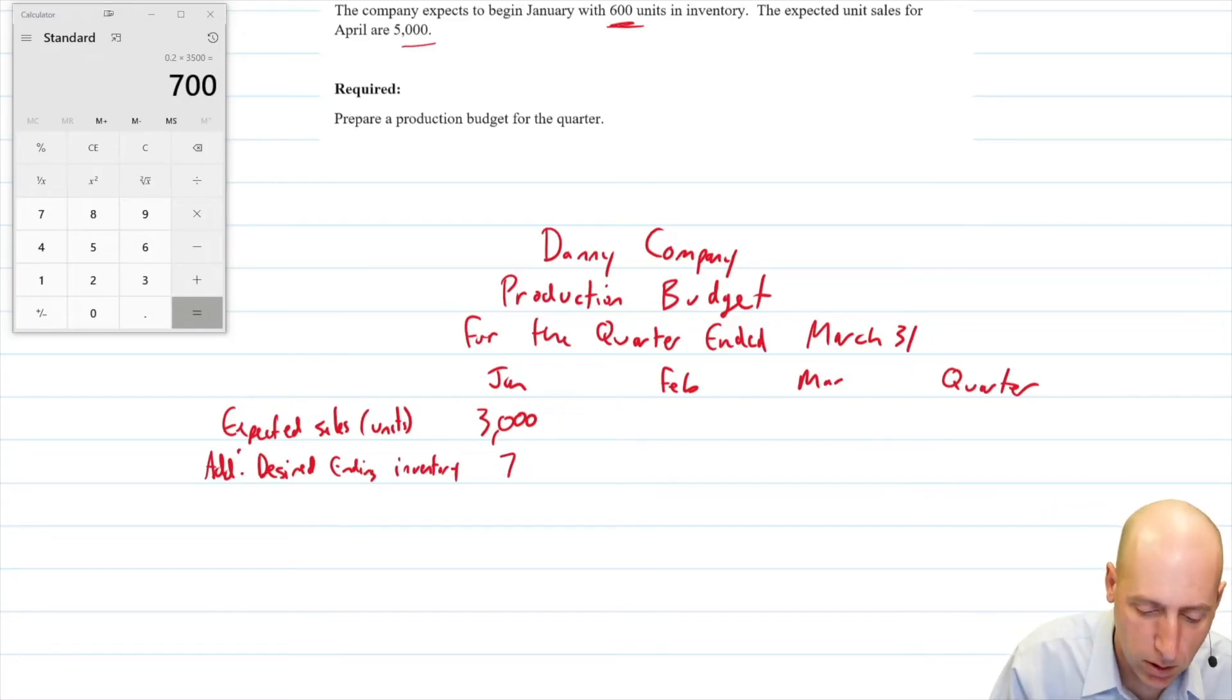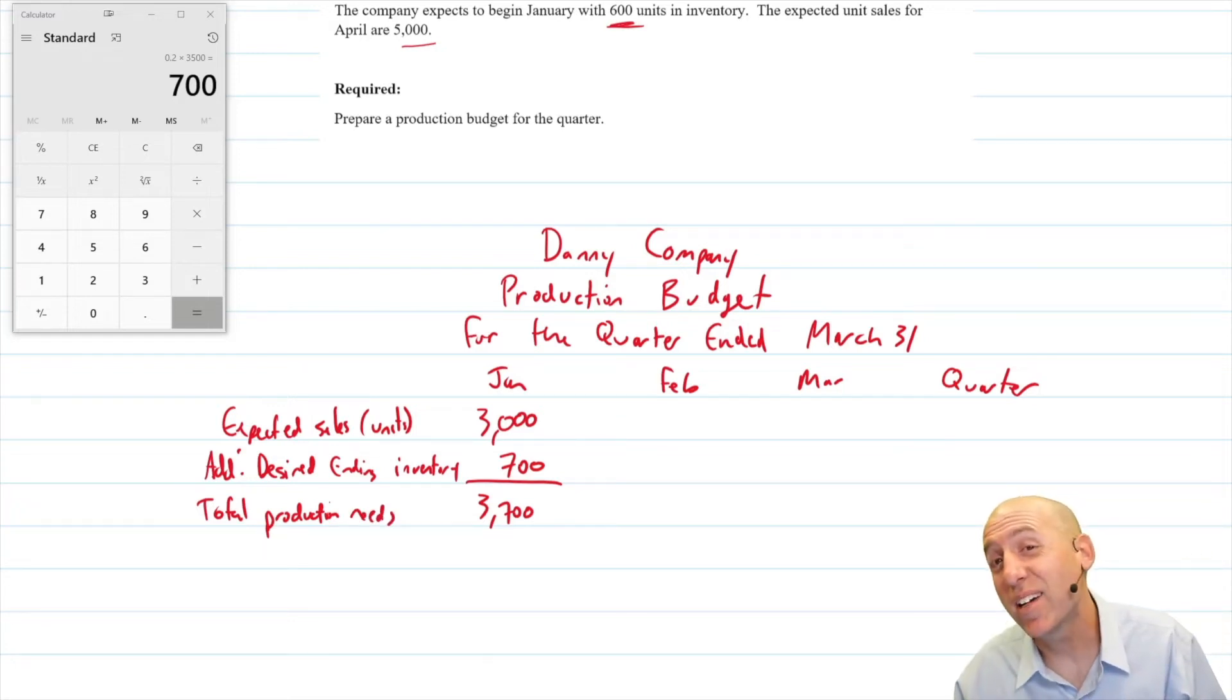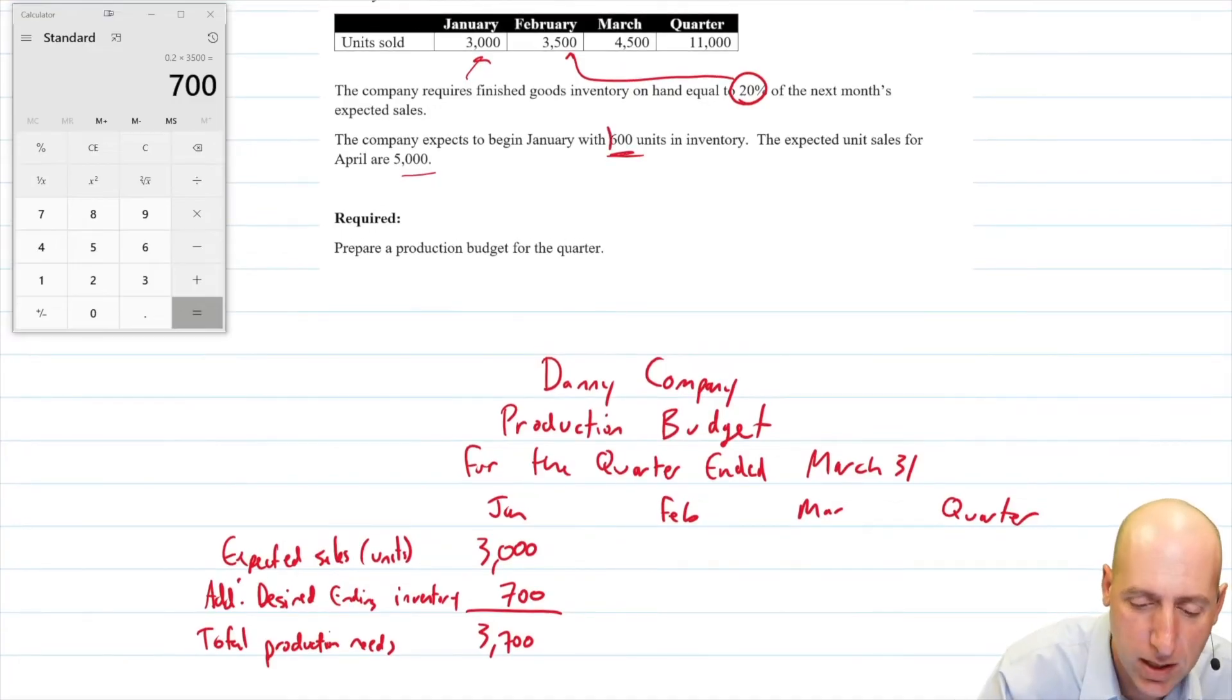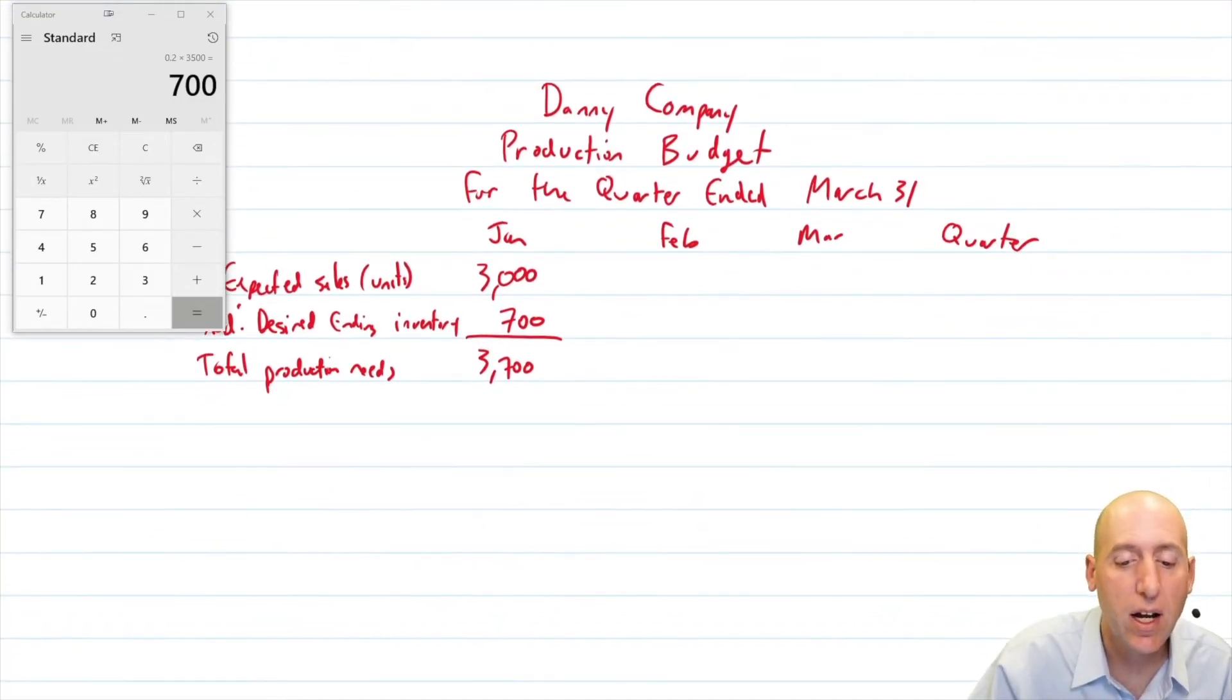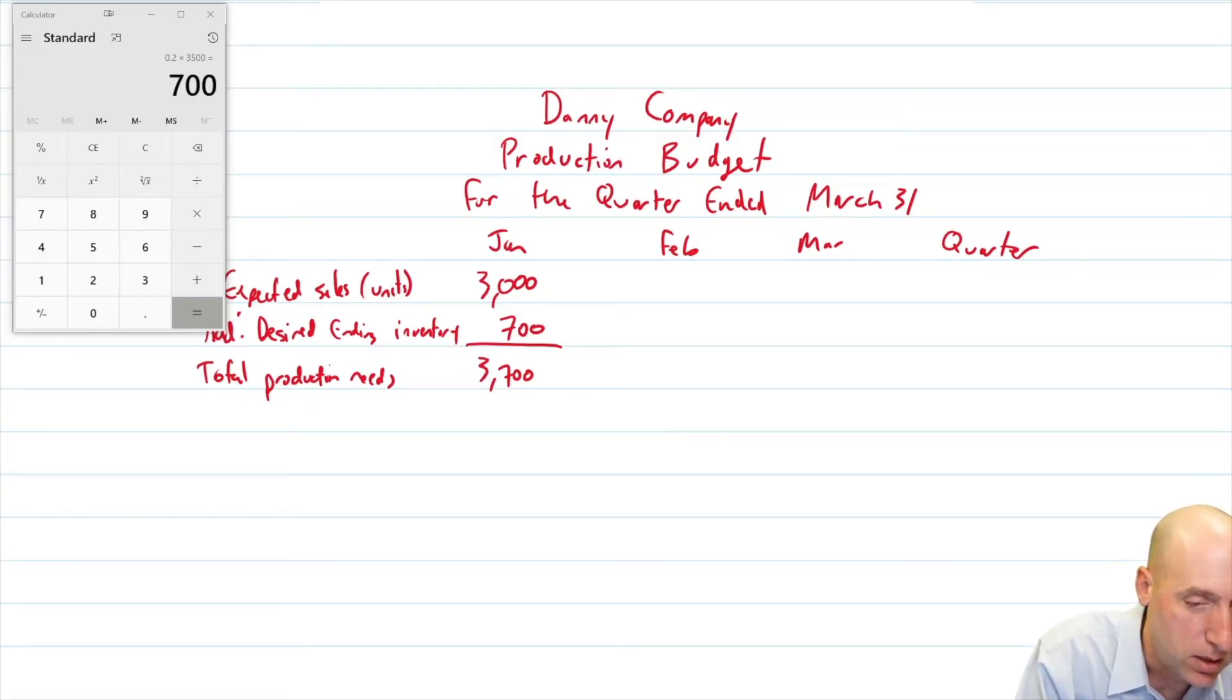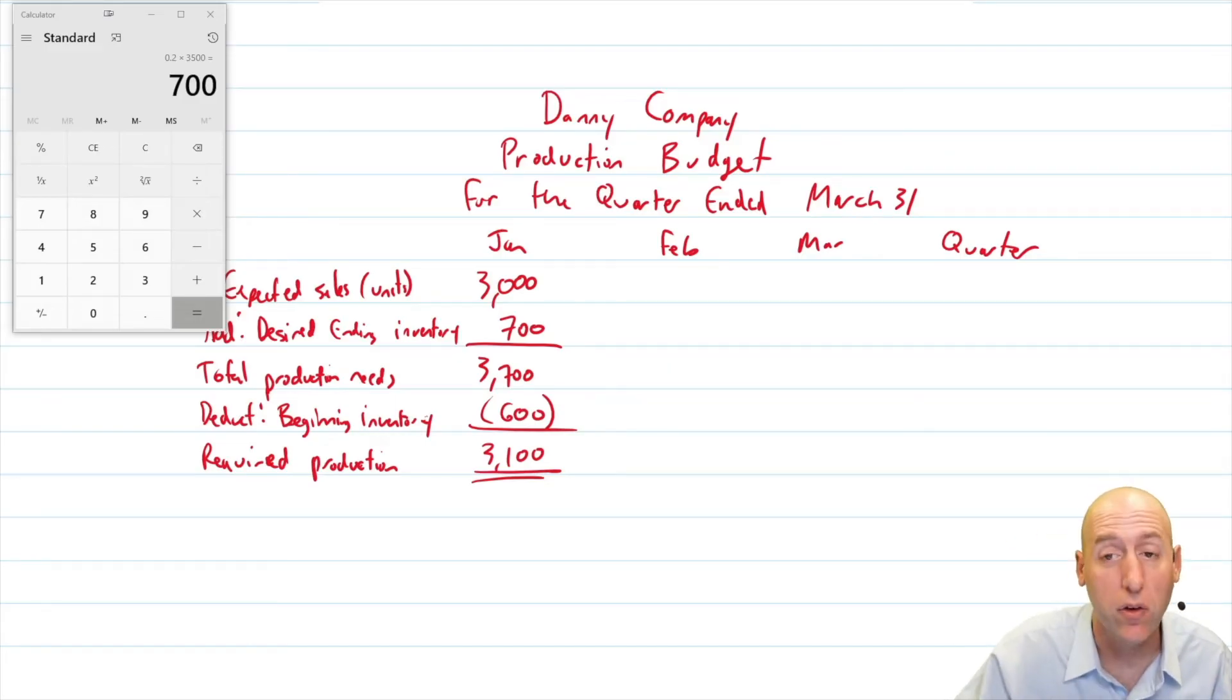In this case, our desired ending inventory, we want to be left with 700. So I want to sell 3000 units, I've got to make 3000 units. I also want to have 700 left over. So I need 3700 units. That's my total production needs. Now good news, I actually don't have to make all 3700. Why is that? Because I had some when I started, I had 600 units to begin with. So I deduct that out. I don't need to produce those 600 units because I already have them. So I'm going to deduct my beginning inventory, and in this case, that was 600. 3700 minus 600 is 3100. That is my required production. And since we're doing a production budget, that's the number we're looking for. No dollar signs here. These are all in units.